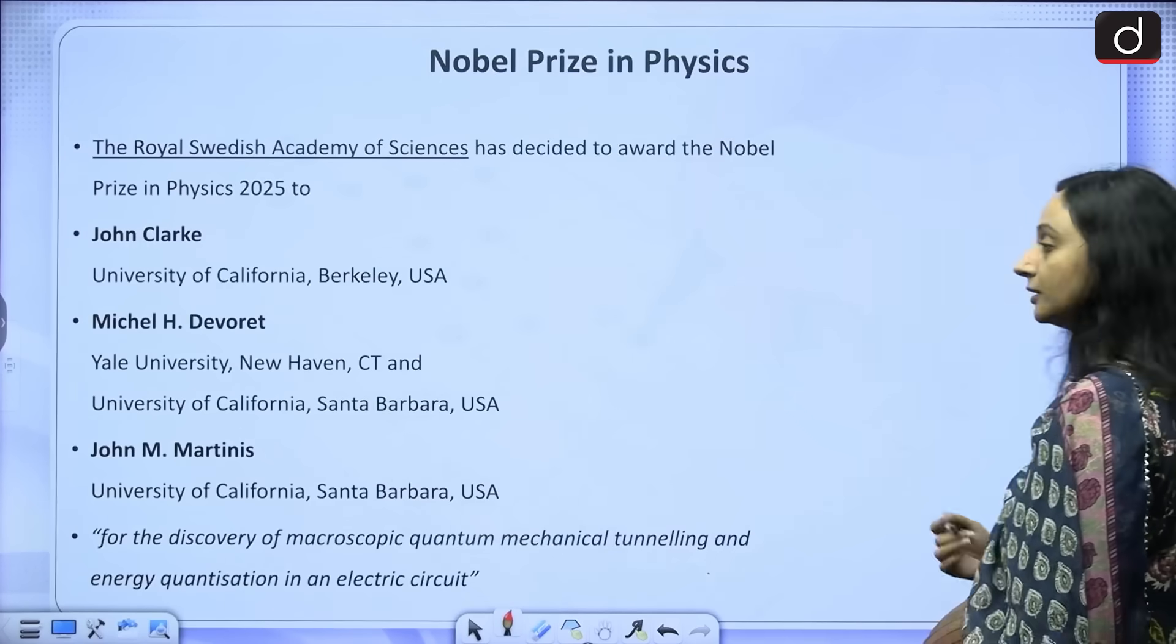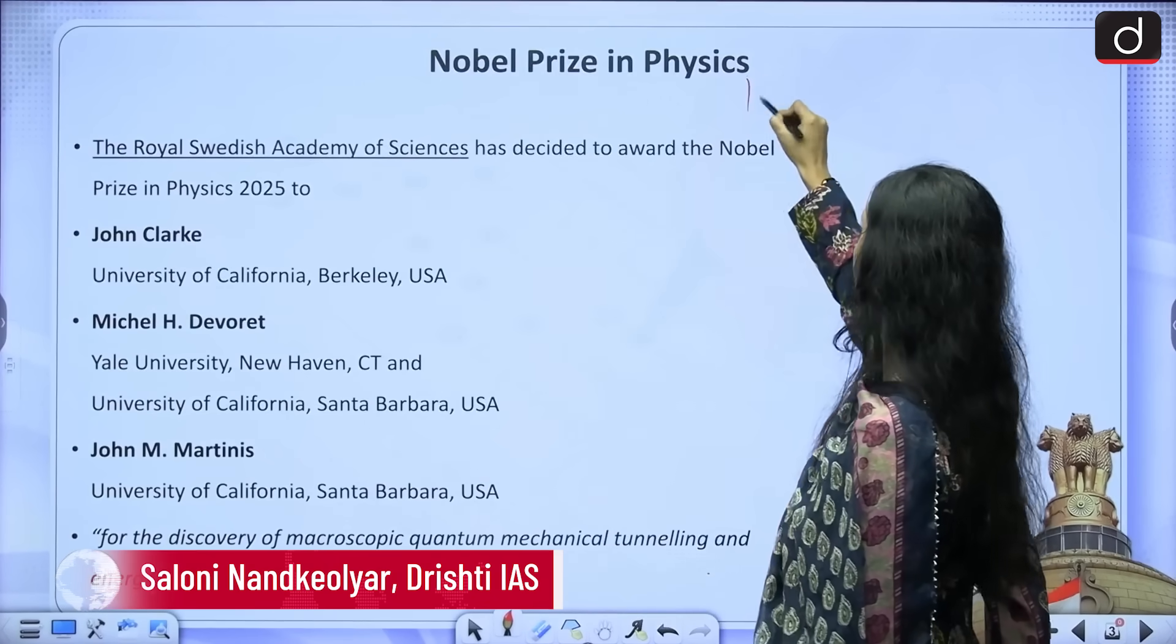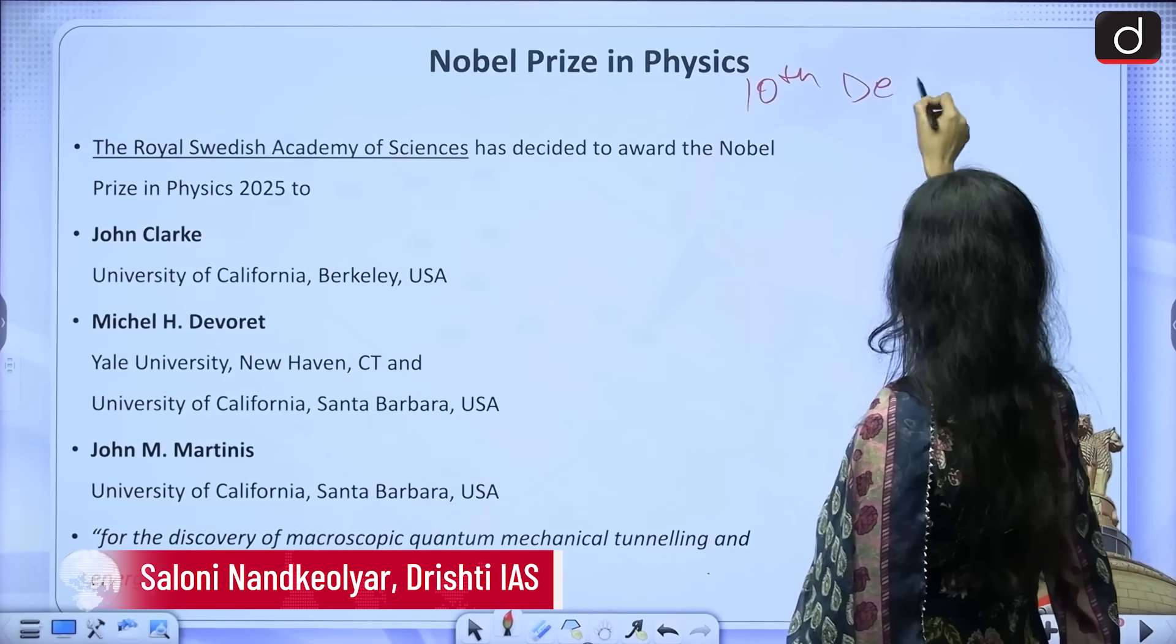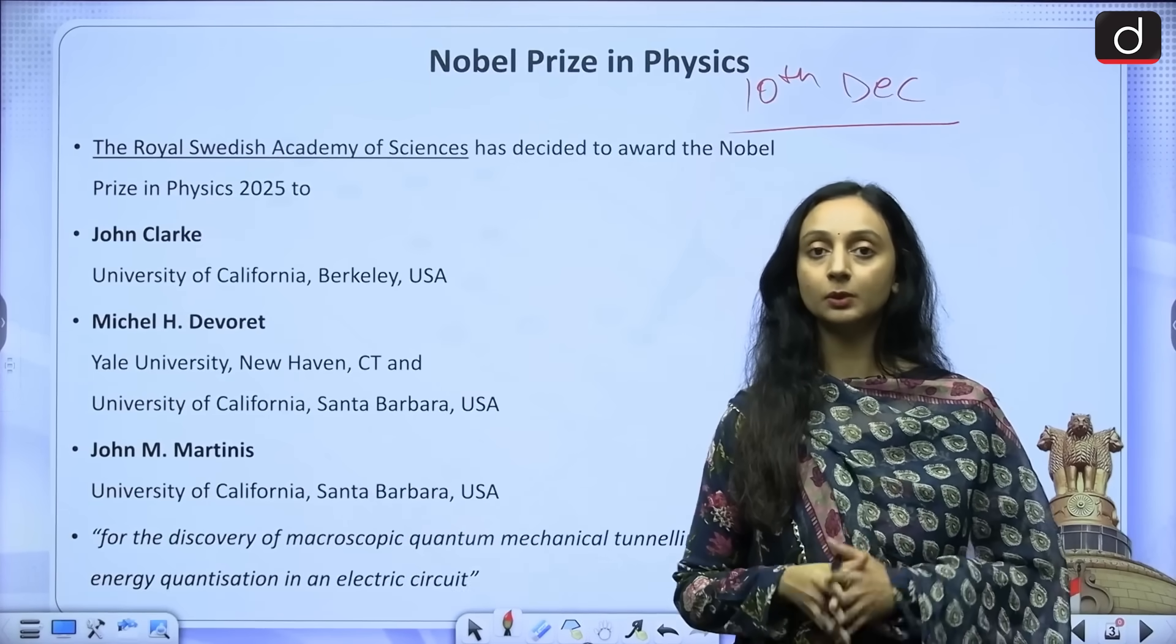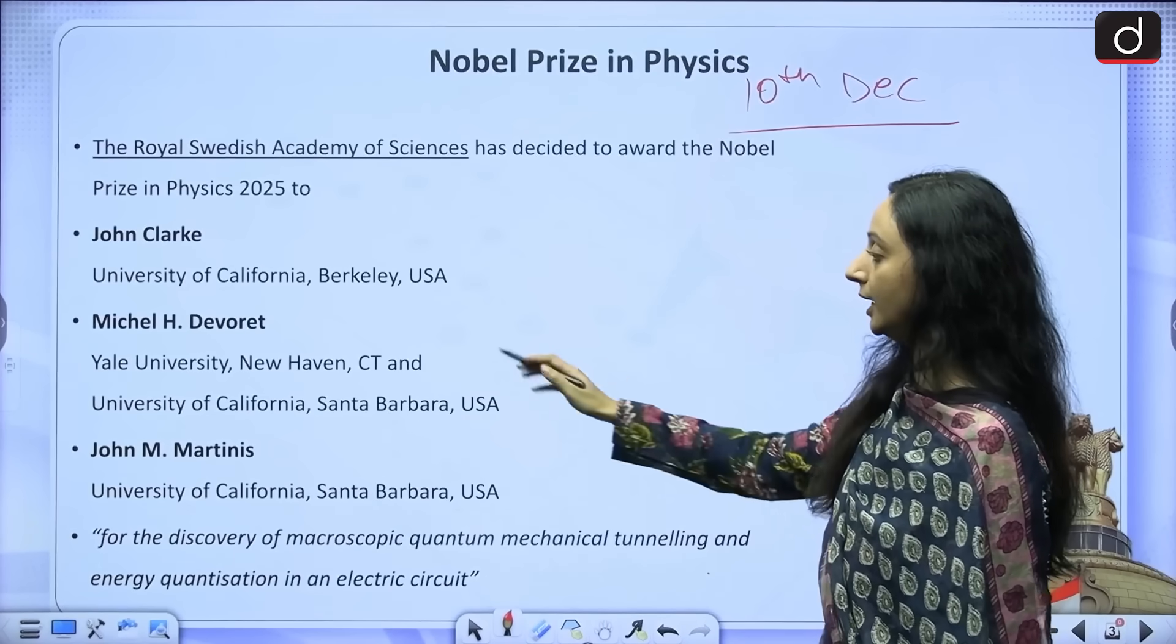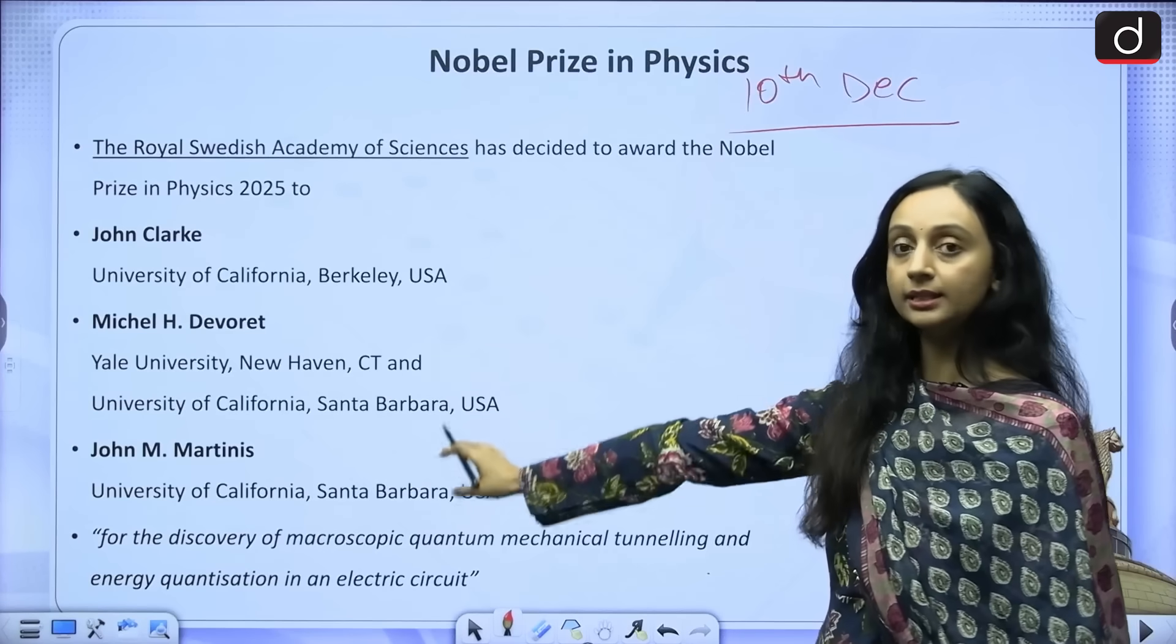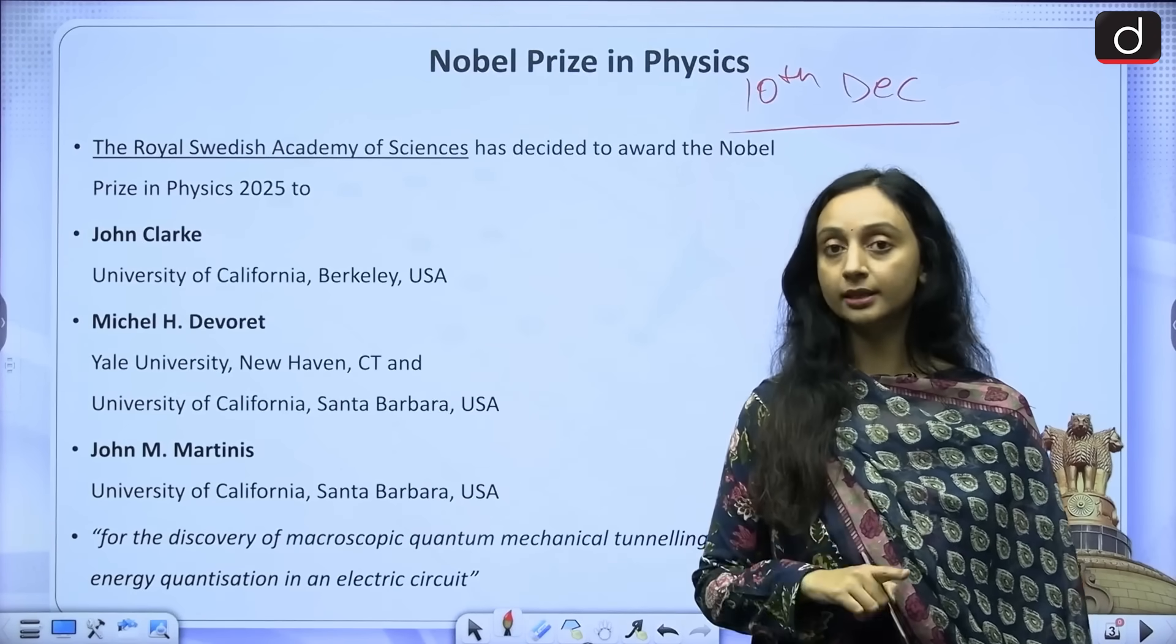As we know that the Nobel Prizes every year are announced in the month of October and presented on the 10th of December because this is the death anniversary of Alfred Nobel. And this year's Nobel Prize in Physics will be presented to three scientists. John Clarke, Michel H. Devere and John M. Martini.